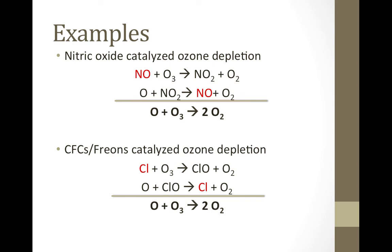In the bottom mechanism, CFCs — chlorofluorocarbons — used to be used as propellants for aerosol cans, but they're banned because they reacted with sunlight and produced free chlorine atoms in the upper atmosphere. Those free chlorine atoms catalyzed ozone depletion. In this mechanism, the chlorine atom, shown in red, is used up first and then produced, but it doesn't appear in the overall reaction. The chlorine atom in this mechanism is the catalyst.